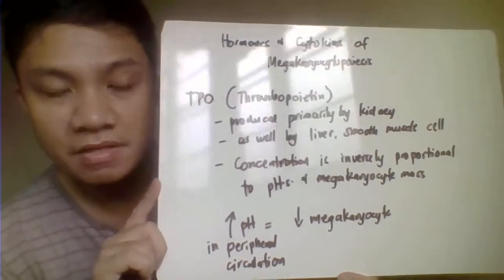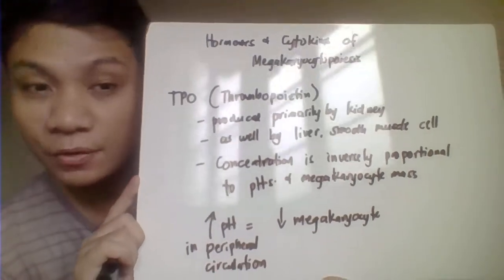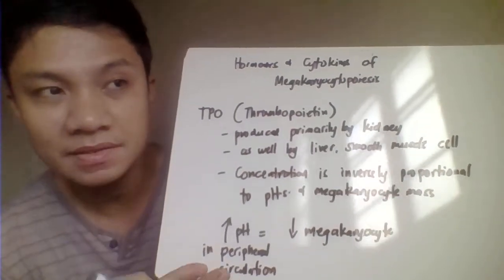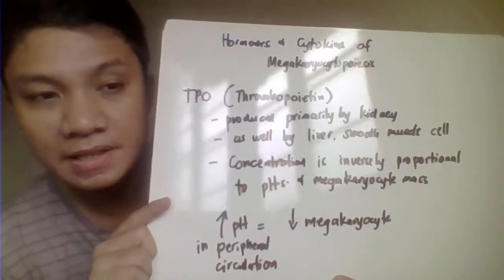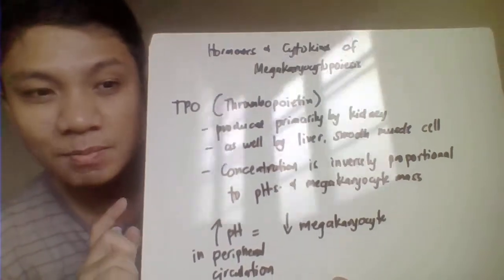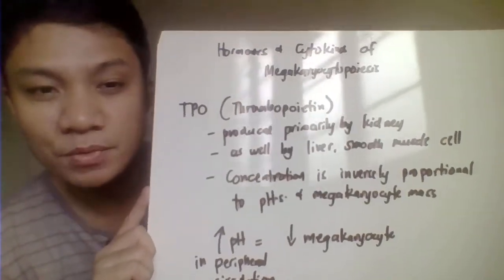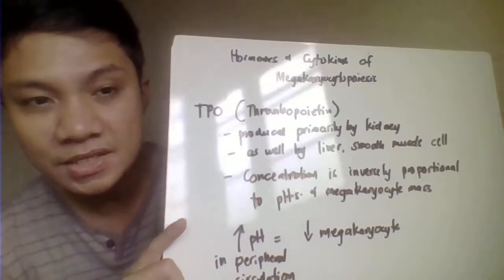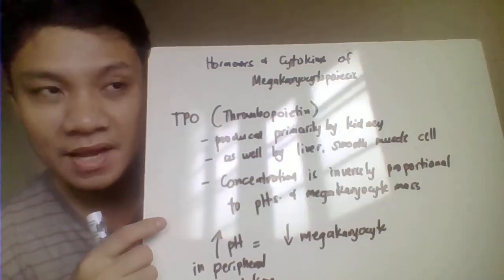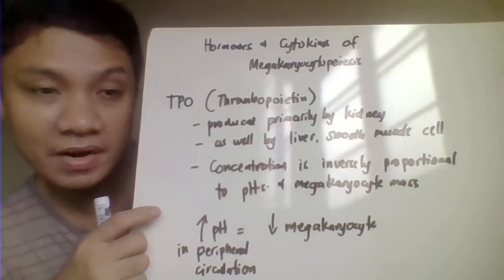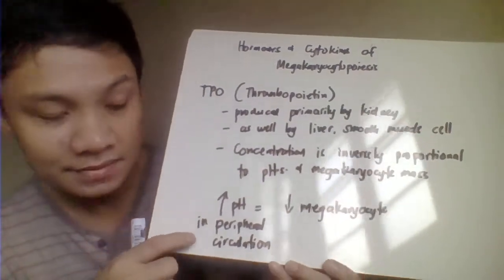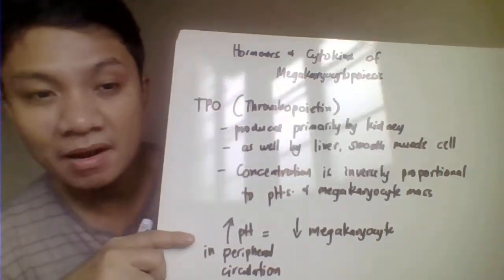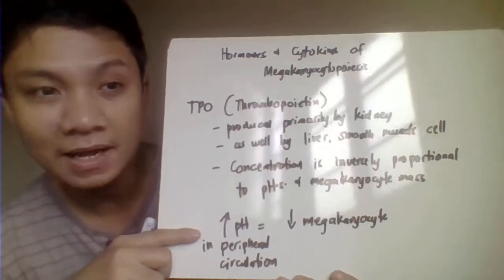We have the different hormones and cytokines considered to be growth factors for the differentiation and maturation of your megakaryocytes from the stem cells. The first one is TPO, your thrombopoietin, which is primarily produced by our kidneys, but also by your liver and even your smooth muscle cells. The concentration of your megakaryocytes, as correlated with the number of platelets in peripheral circulation, is inversely proportional — when you have many platelets in peripheral circulation, you should have a decrease in megakaryocytes to prevent excessive platelets.